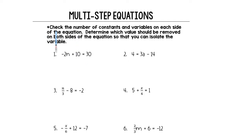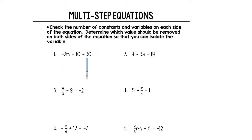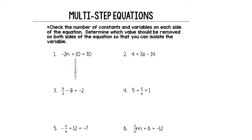So let's read what this says. Check the number of constants and variables on each side of the equation. Determine which value should be removed on both sides of the equation so that you can isolate the variable. We've got on the right one constant, on the left a variable and a constant. The shortest path to get this equation solved is going to be to leave the variable exactly where it is and move all the constants to the other side of the equation.